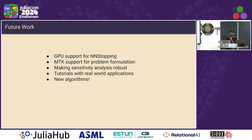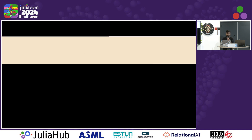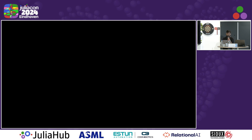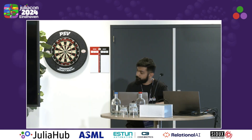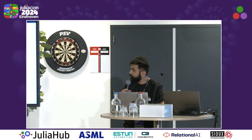There is some future work: we need GPU support for NN-stopping, we can also add MTK support, and sensitivity analysis is not very robust at the moment — you need to train with some nuances, so we are going to make it more robust. That's all. Thank you.